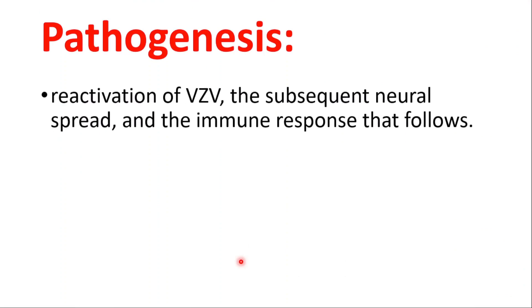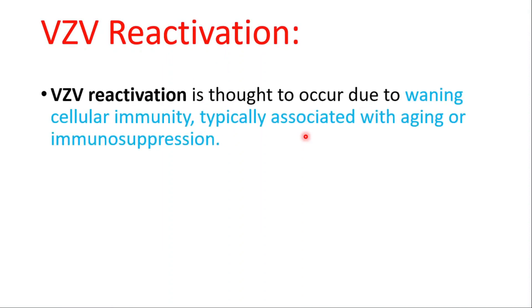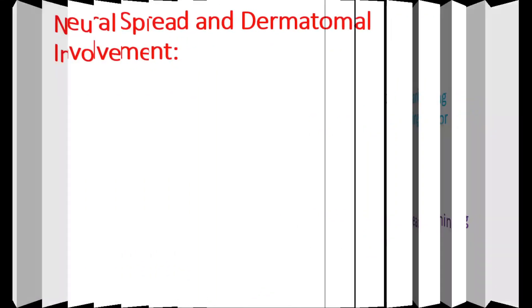Now let's talk about pathogenesis, which involves reactivation of VZV, the subsequent neural spread, and the immune response. VZV reactivation is thought to occur due to waning cellular immunity, typically associated with aging or immunosuppression. The virus travels along sensory nerve fibers, reaching the skin and causing the characteristic rash.